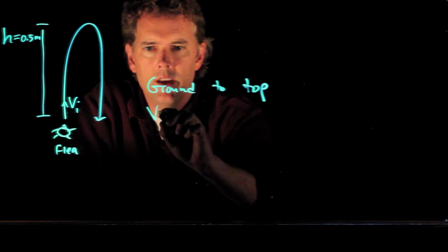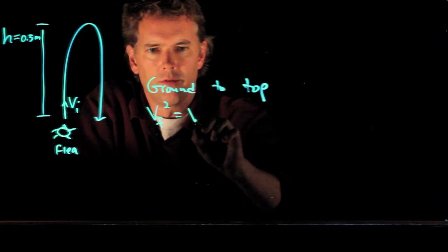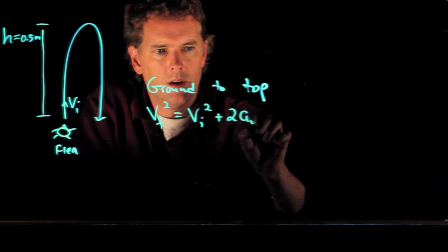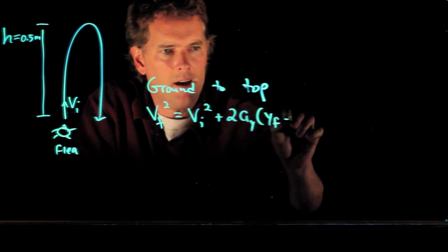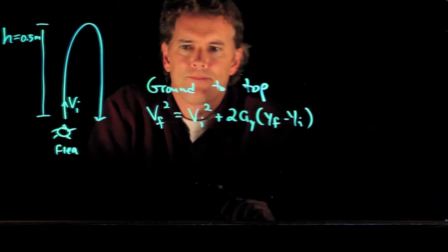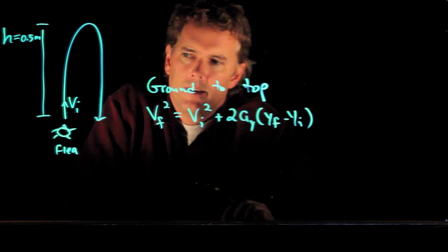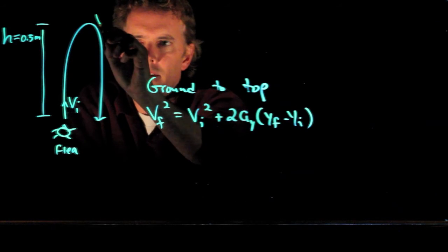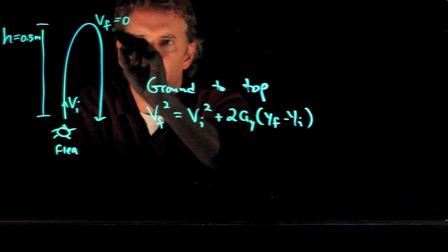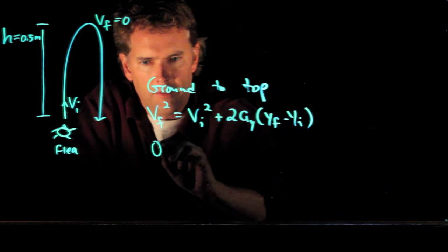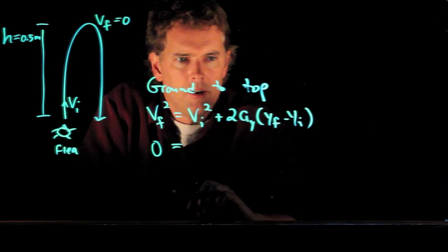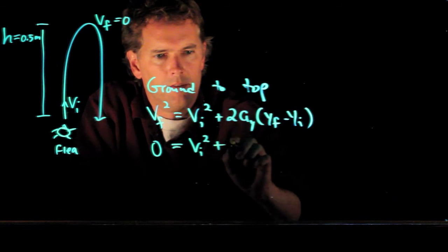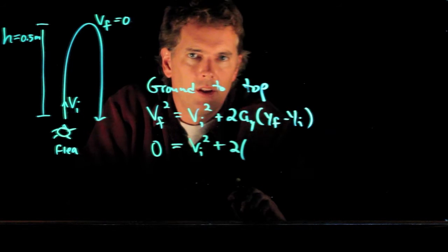Well, we have VF squared equals VI squared plus two A sub Y YF minus YI. Okay. We know what the speed is at the top. VF up there is going to be zero. So the left side of the equation becomes zero. And we have VI squared plus two times the acceleration.